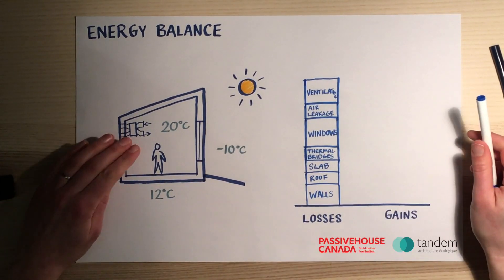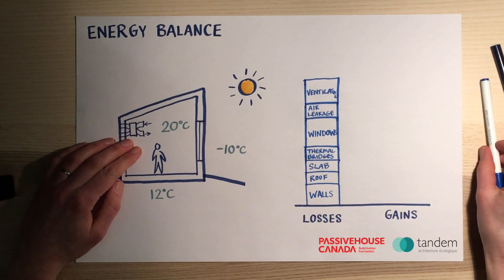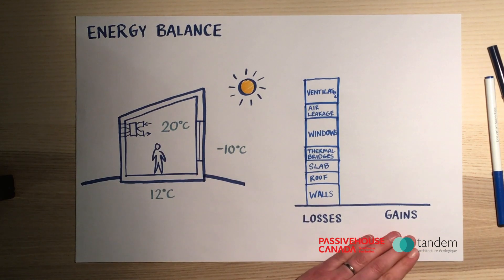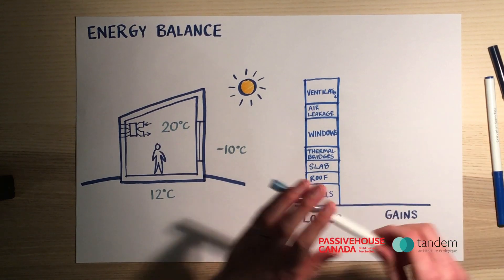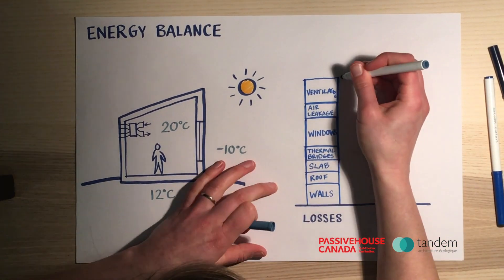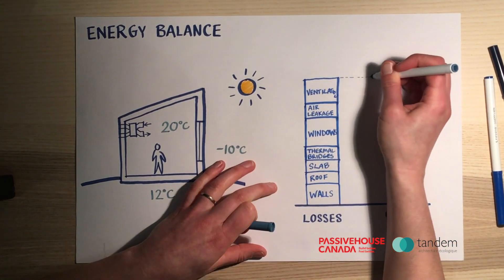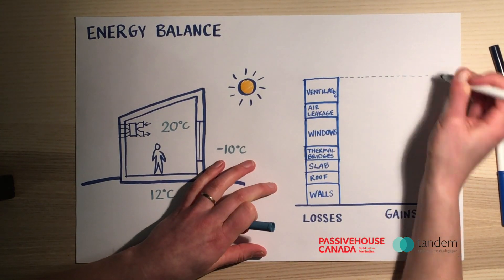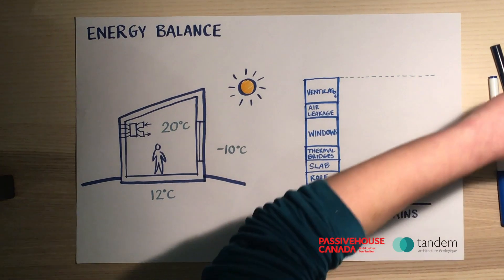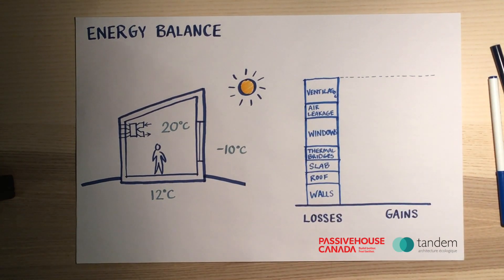So in order to maintain a stable interior temperature, our losses and gains have to be equal. That means we need to build up the gains side of our equation.